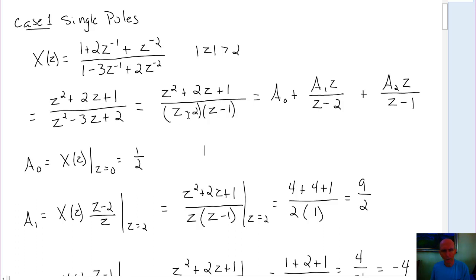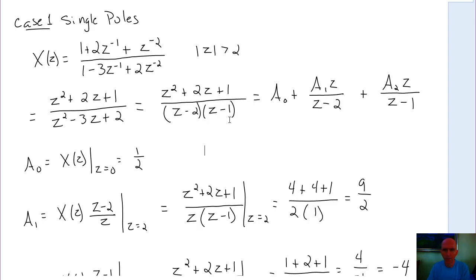We look at the denominator, we can factor it, and we see it has two poles: a pole at z equal to 2 and a pole at z equal to 1. We're going to do the partial fraction expansion. When you were doing the inverse Laplace transforms, generally the denominator had a higher polynomial power than the numerator. In this case, that's not always going to be the case. For example, we have z-squared both in the numerator and the denominator. Because of that, we have this constant term A₀ in our partial fraction expansion.